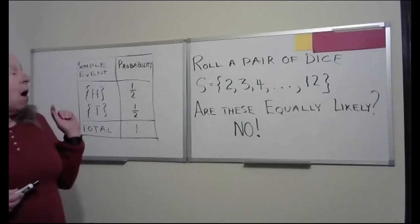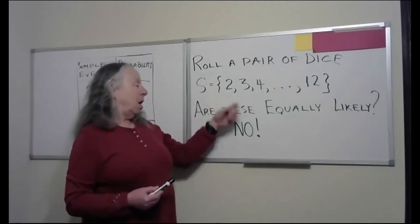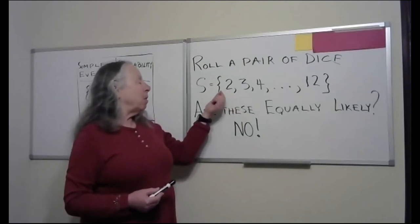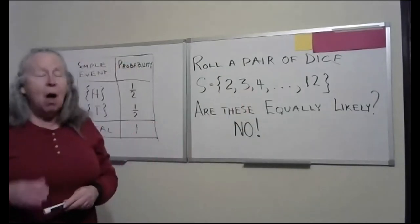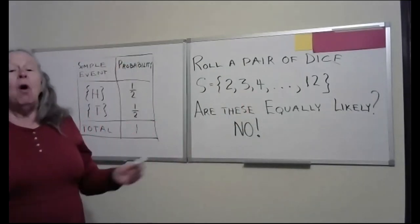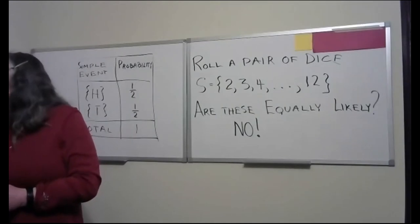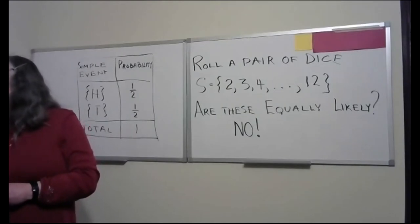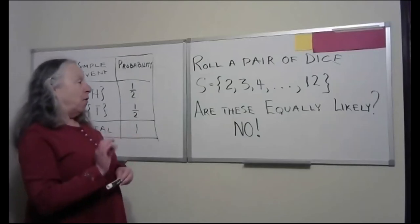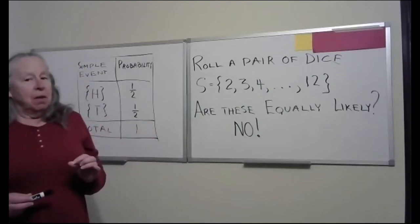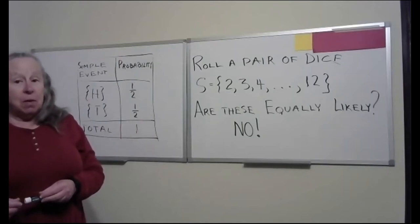Even though rolling two dice is not a uniform sample space, if we add up the probability of getting a two, a three, a four, all the way up to a twelve, those all add together to give one. When we look at the probability of the union of two simple events, we simply add the probabilities of each of those simple events.